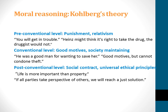The second level is the conventional level. Here we look at the motives behind what a person did — did this person have good motives, such as being a good man for wanting to save his wife? We're also looking at actions that help maintain the social order. A response here might say he had good motives, but theft cannot be condoned because it does not help maintain social order.